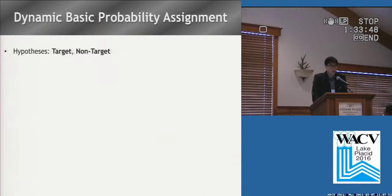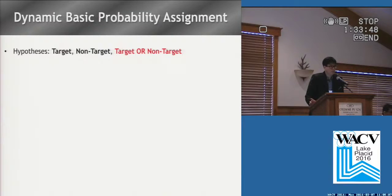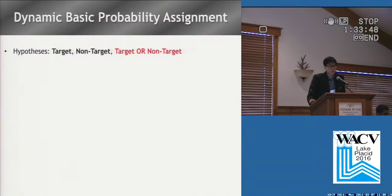For object detection, we can consider two hypotheses: target and non-target. To these hypotheses, we can add one more: target or non-target. This third hypothesis measures the level of uncertainty in performance of each detector.